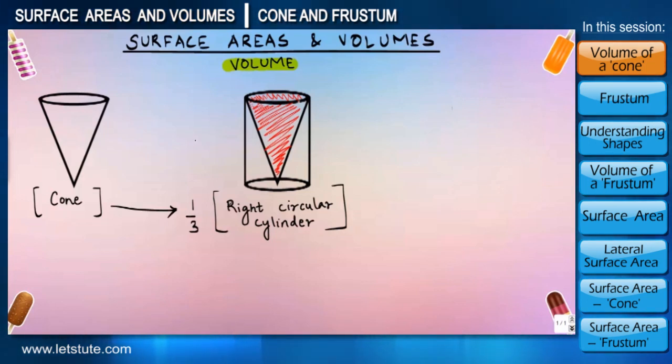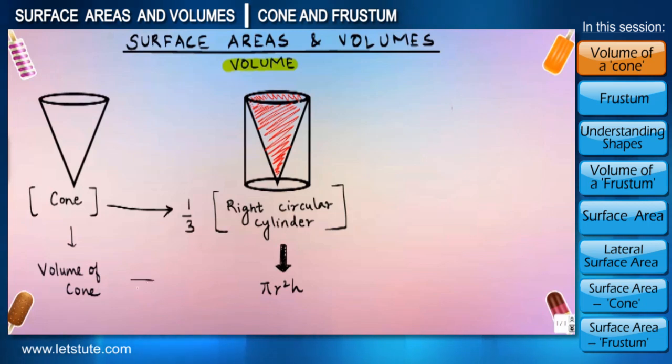We all learned in our previous session that the volume of a right circular cylinder is pi r square h. So it was found by many great mathematicians that volume of cone is 1/3 pi r square h, that is one third of the volume of a cylinder.